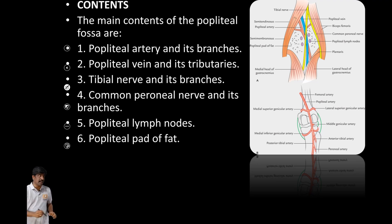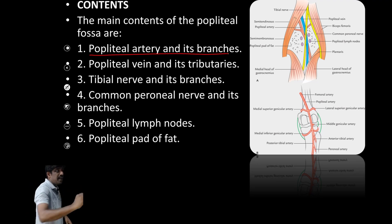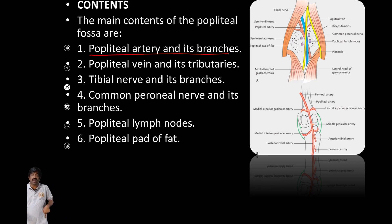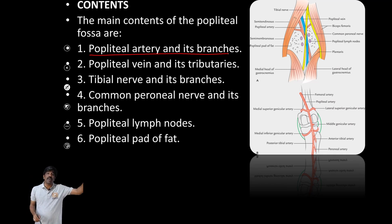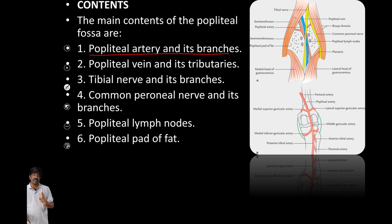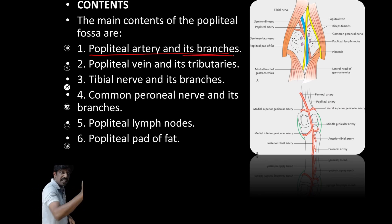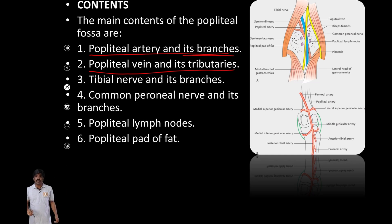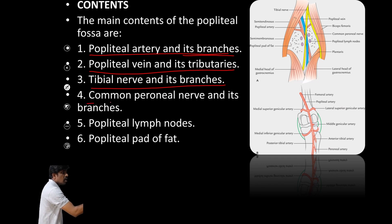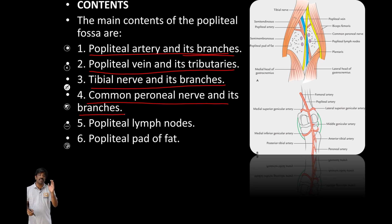The popliteal fossa contains the popliteal artery and its branches — the popliteal artery is nothing but a continuation of the femoral artery. It also contains the popliteal vein and its tributaries, the tibial nerve and its branches, and the common peroneal nerve and its branches. Both the tibial nerve and common peroneal nerve are branches of the sciatic nerve.